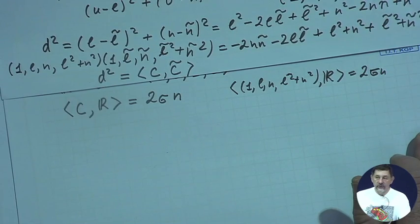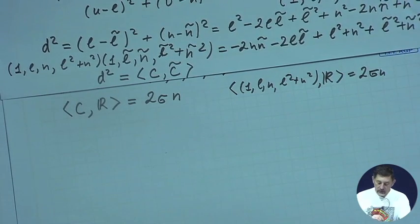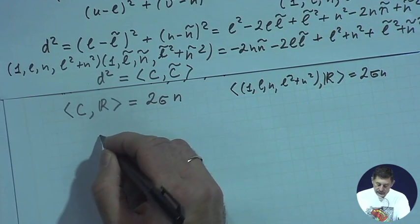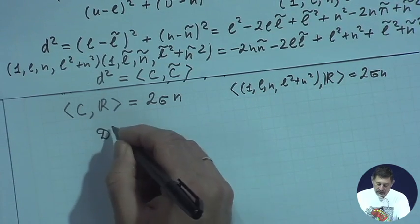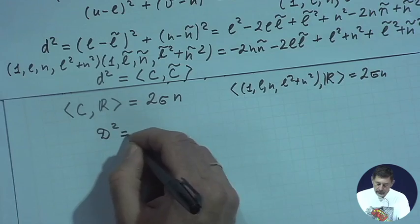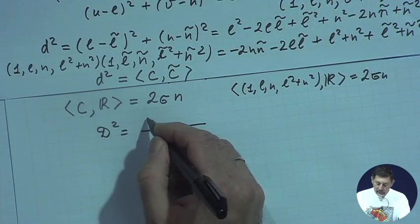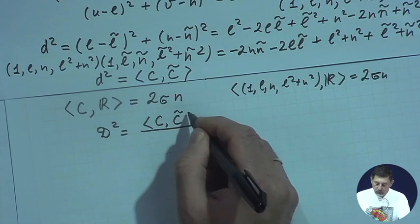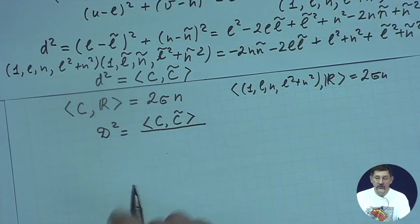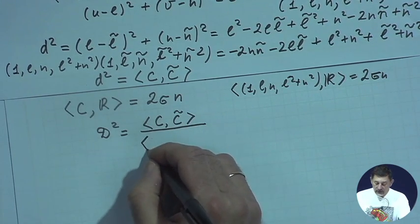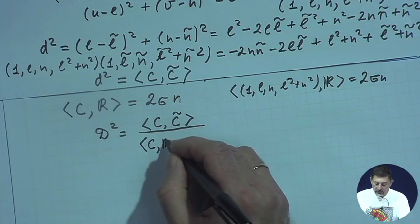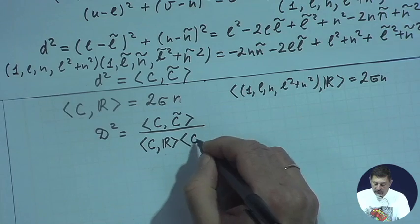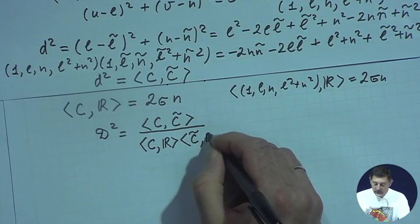Now consider the expression — call it D² — which is the inner product of two cycles representing points, divided by the product of C with the real line and C-tilde with the real line.